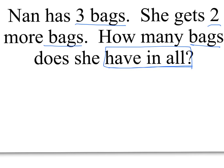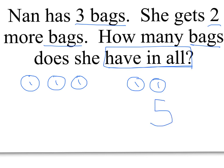Ready to check? All right. Nan has three bags — one, two, three. There's her three bags. She gets two more bags — one, two. How many bags does she have in all? One, two, three, four, five. She has five. And our label — we've been talking about bags. I have my picture and my answer with the label, but I still need to write out my number sentence.